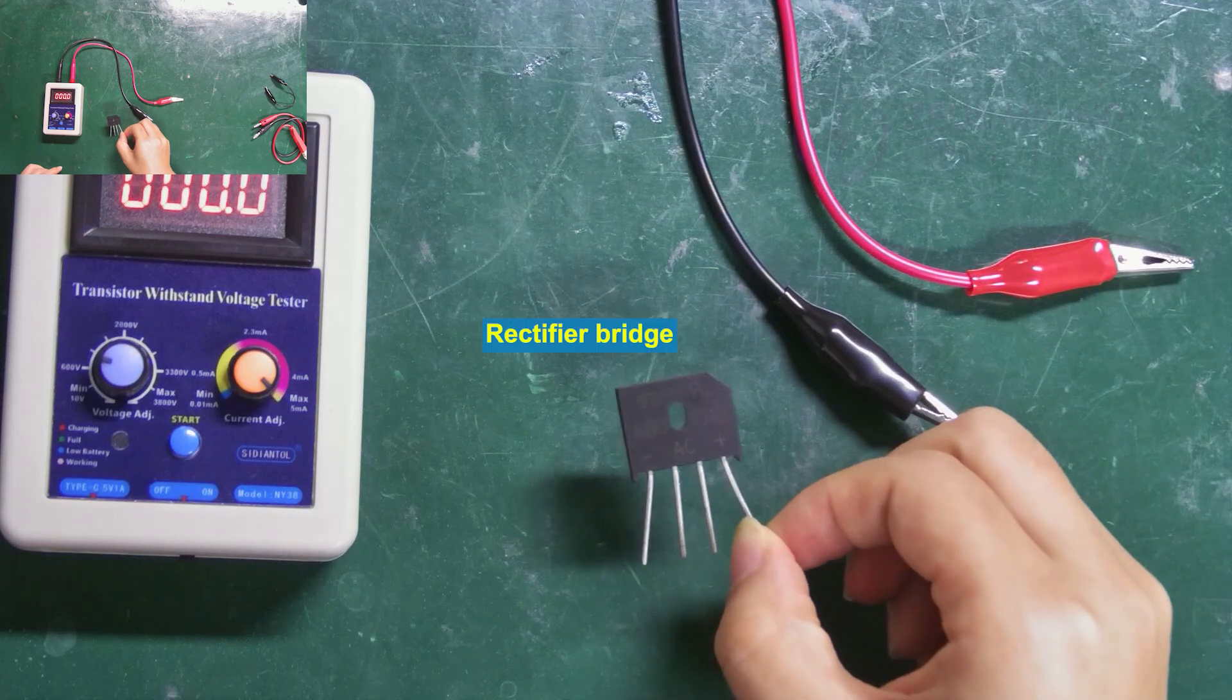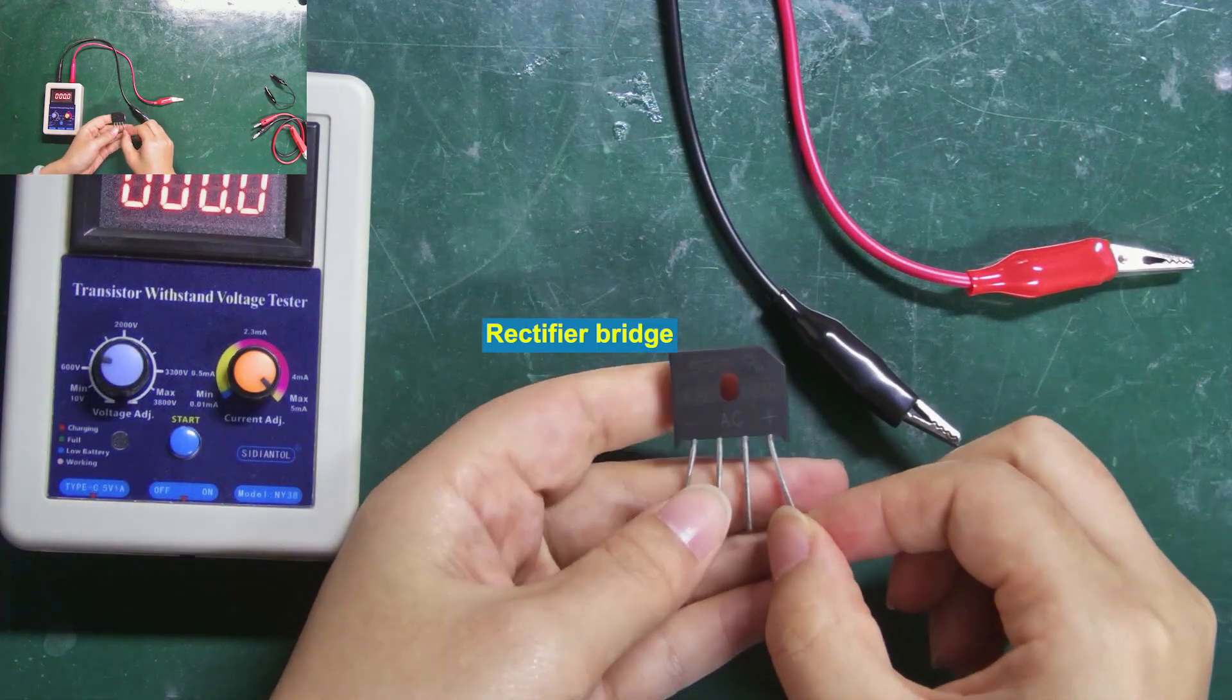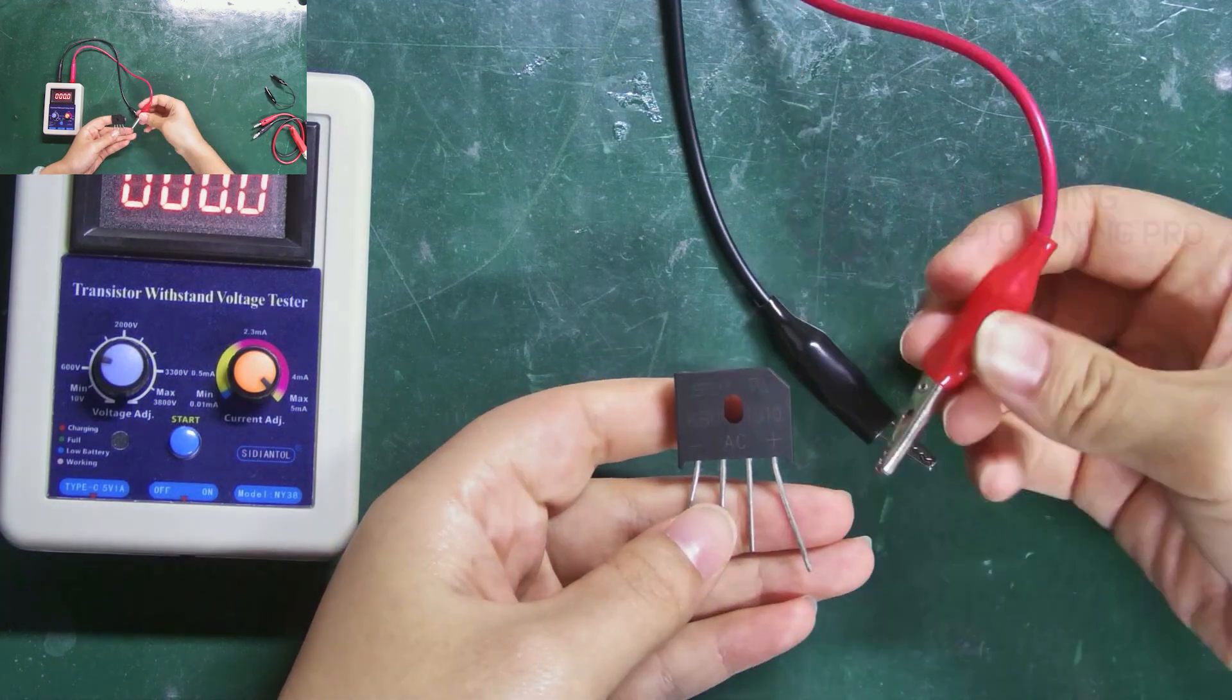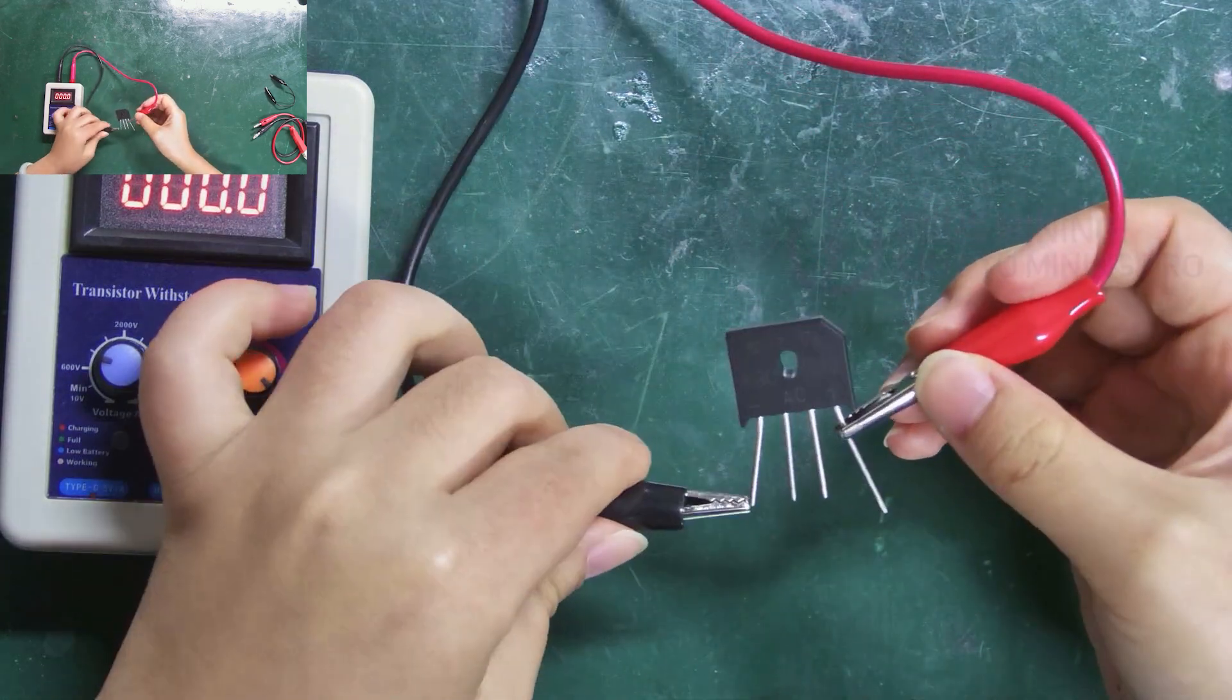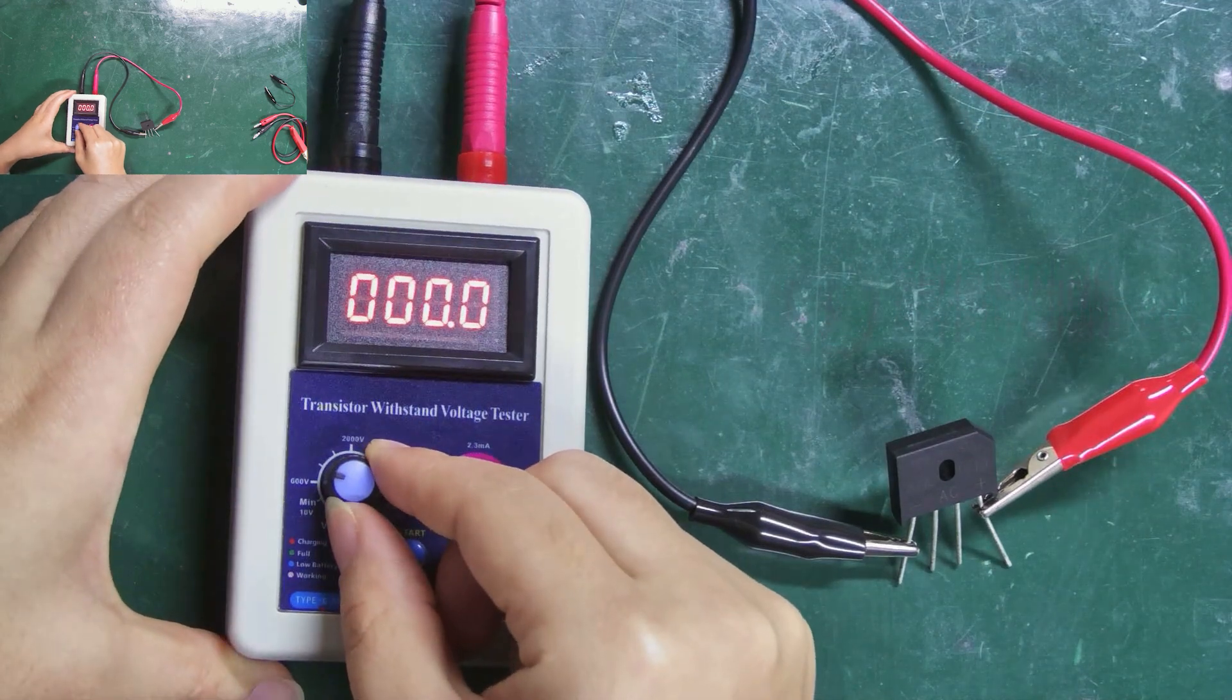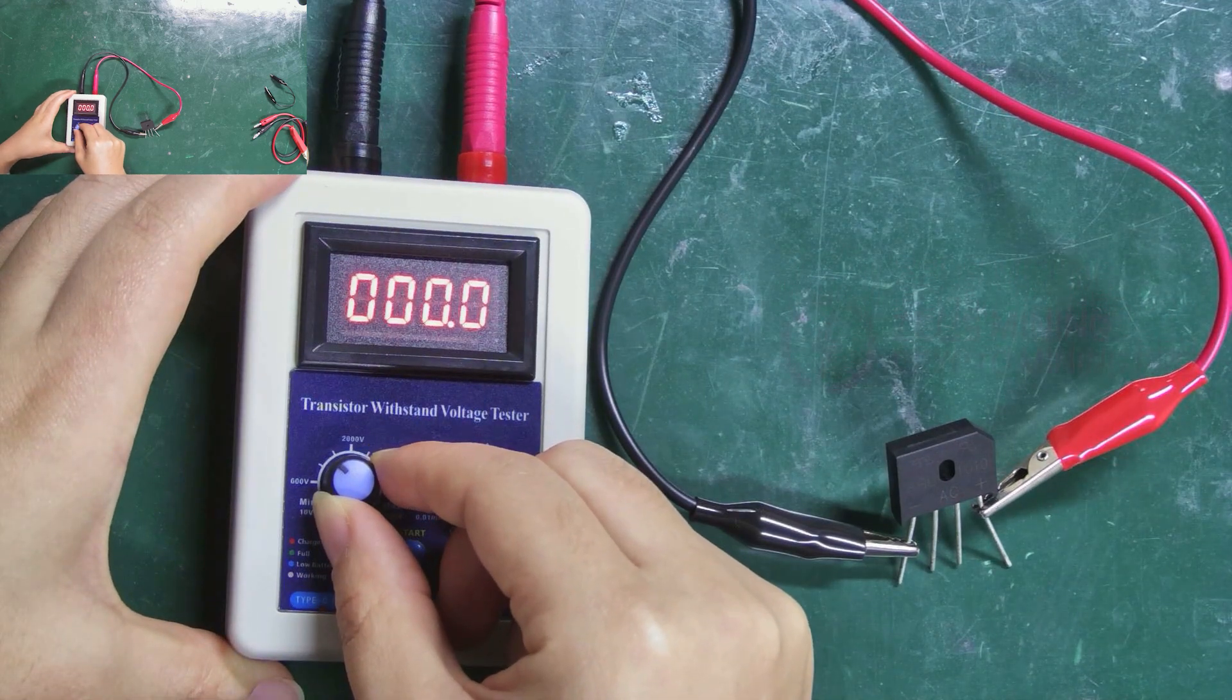Let's continue to measure this rectifier bridge, which is withstand voltage value for about 1000 volts. Connect the positive and negative poles. Then adjust the voltage to be greater than 1.5 times its withstand voltage value.